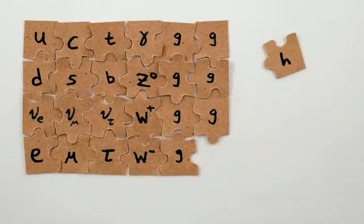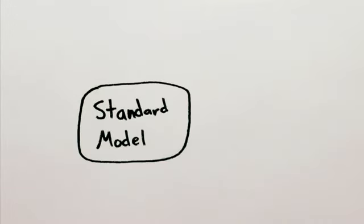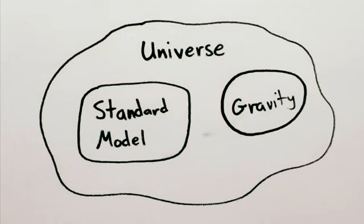And if it turns out to be exactly what was predicted, the standard model will be complete. The only problem is that we know the standard model isn't a complete description of the universe, it entirely misses out on gravity, for example.